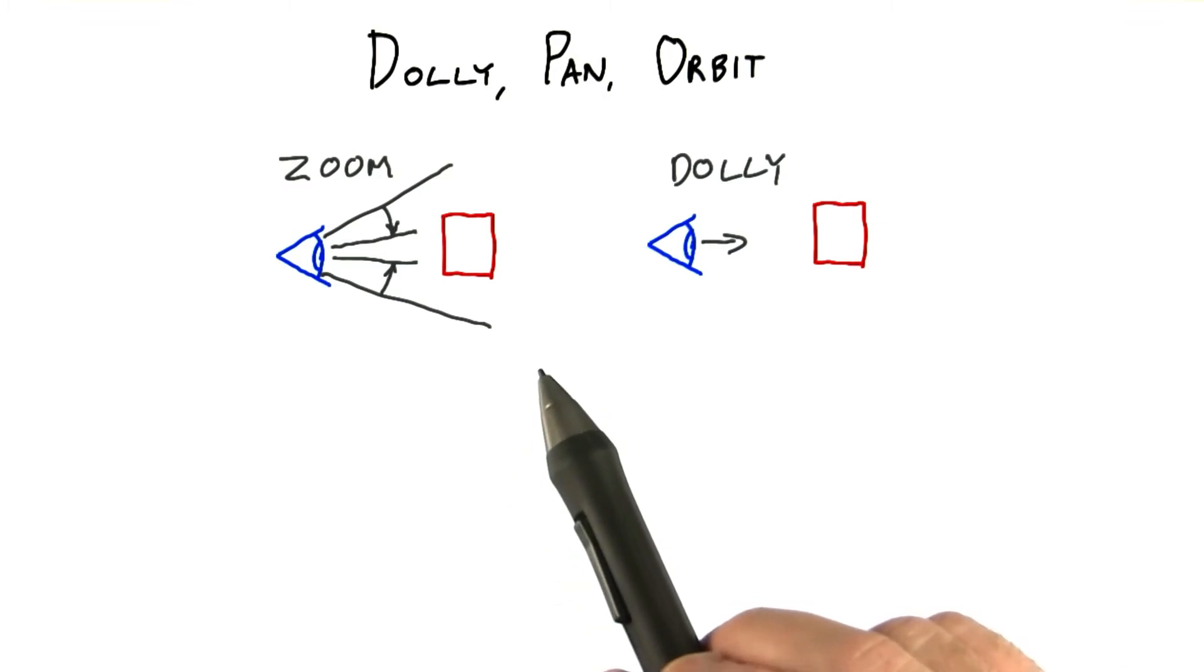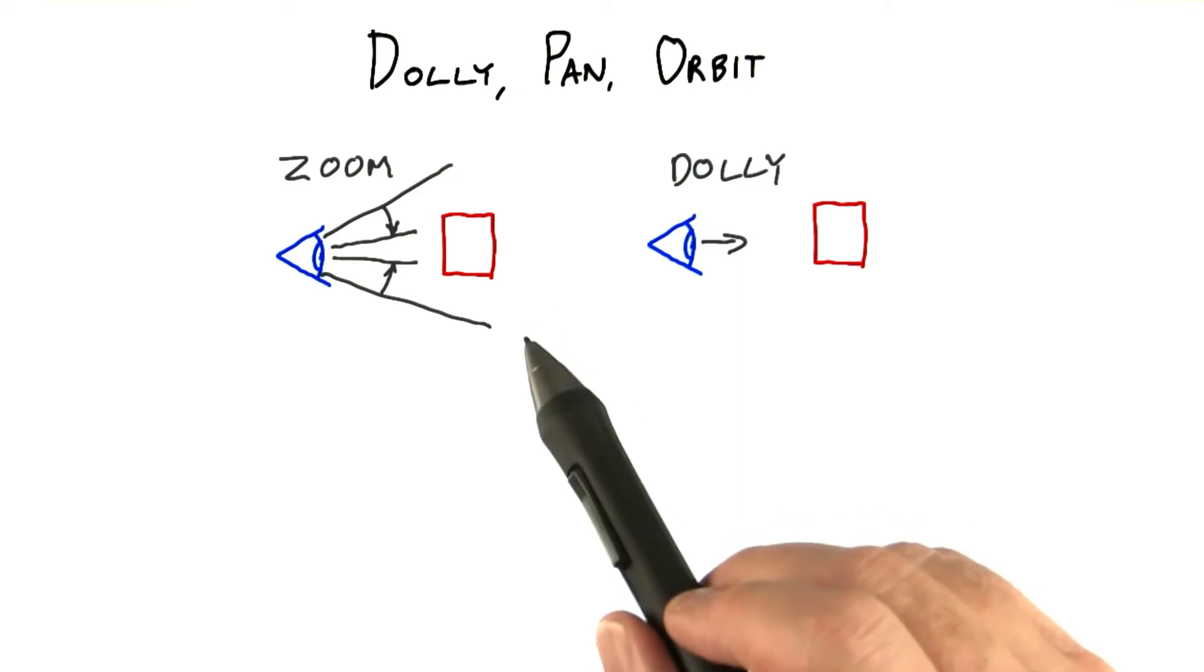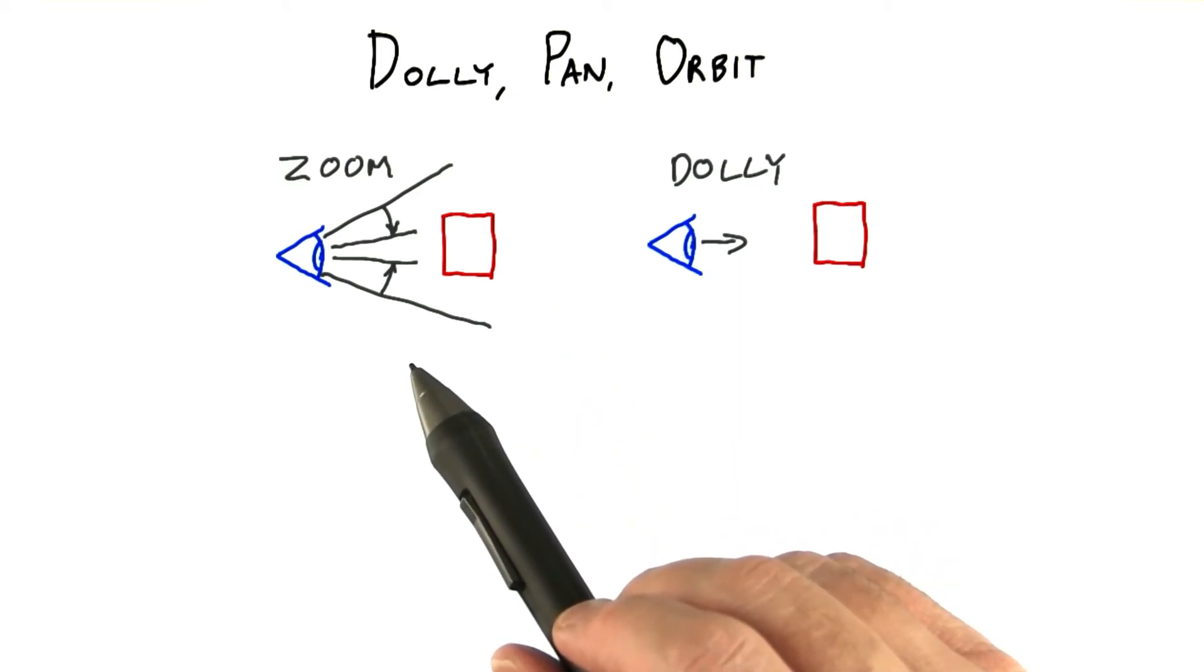The one giveaway that you're dollying and not zooming is that if new faces become visible or disappear. Zooming changes the size of the image seen, but does not change visibility. All that said, I'll sometimes say zoom in when the controls are actually dolly controls, just because most people don't know what dolly in means.